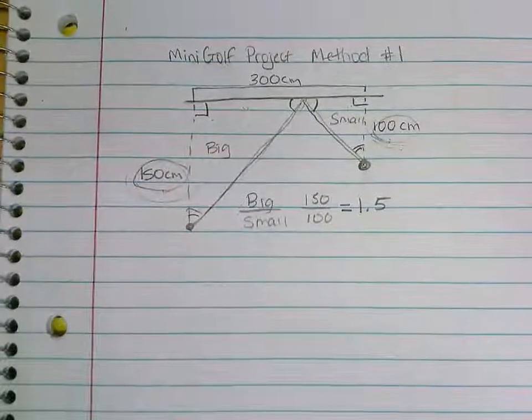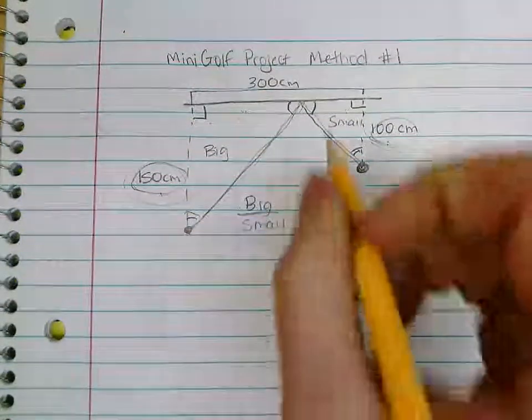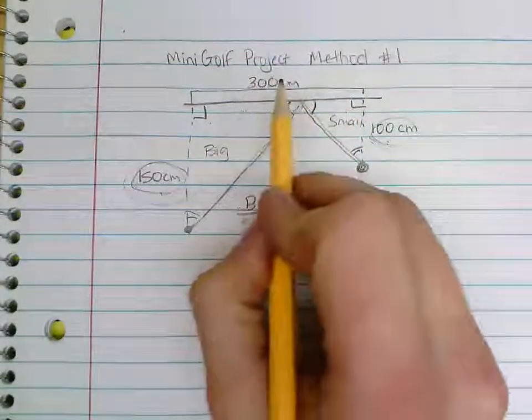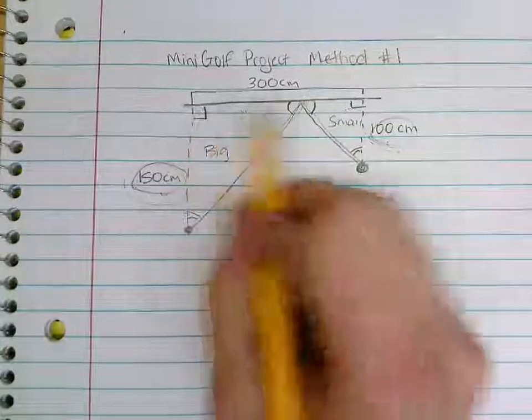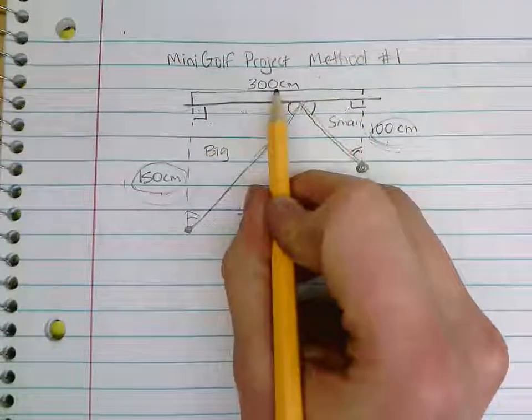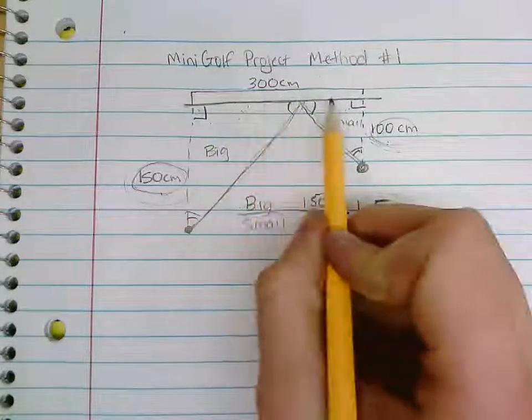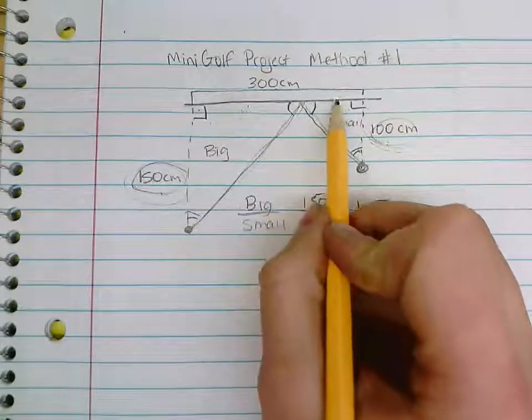So one way that we can approach this is to label these here and create an equation, because I know it has to equal a total of 300. So this measurement plus this measurement equals a total of 300. And I also know that this measurement needs to be 1.5 times the size of or the length of this measurement here.